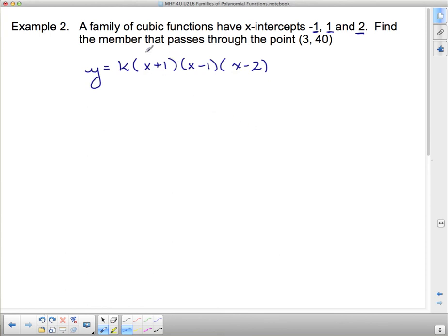Now to find the specific family member, it's asking us to find the k value. And we've done that before. We know that we need an extra point, which I've got here, which is an x and a y. So I'm going to put 40 in for y and 3 in for x.